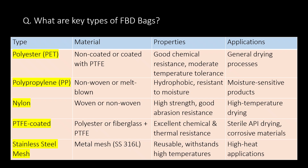What are the key types of FBD bags? You can refer to the below table for key types, material properties, and applications. Key types are polyester (PET), polypropylene (PP), nylon, PTFE-coated, and stainless steel mesh type.